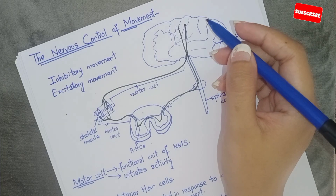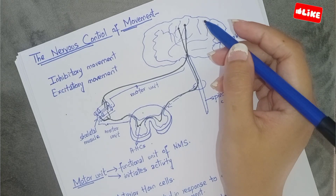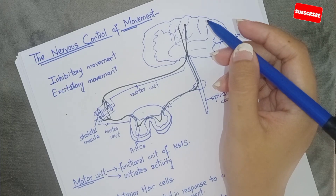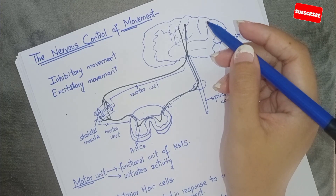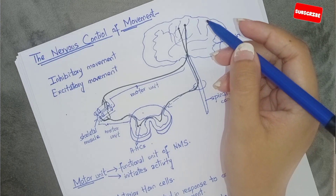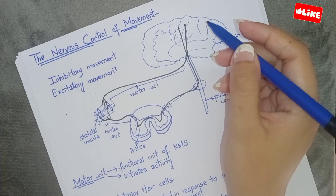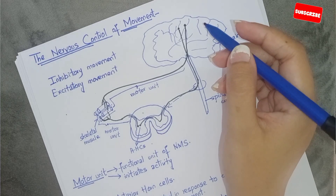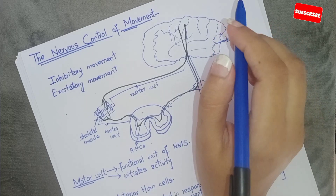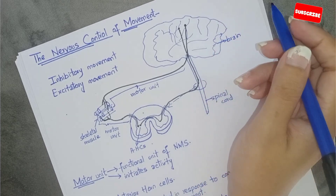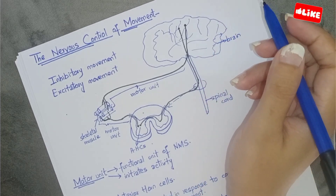We have studied the reflex movement. For example, when our hand is near a heater and we feel the heat, we withdraw our hand from the heater. That is called a protective response — it is called the reflex movement.